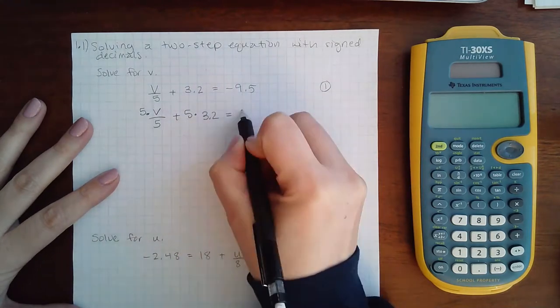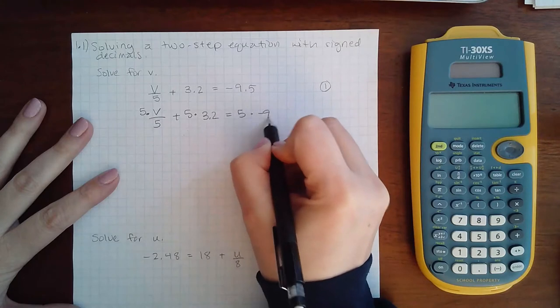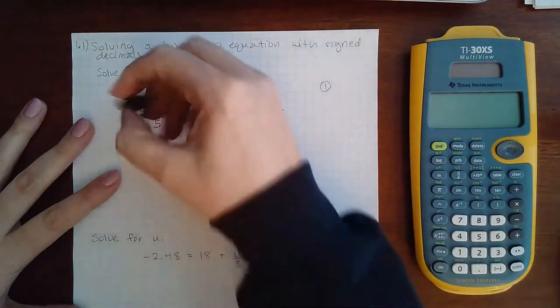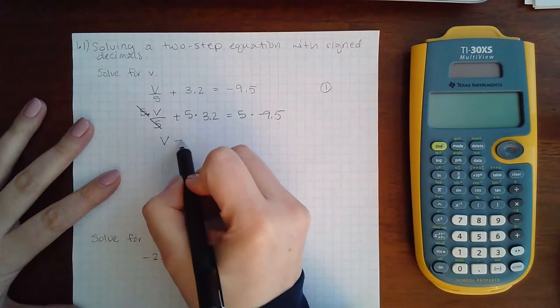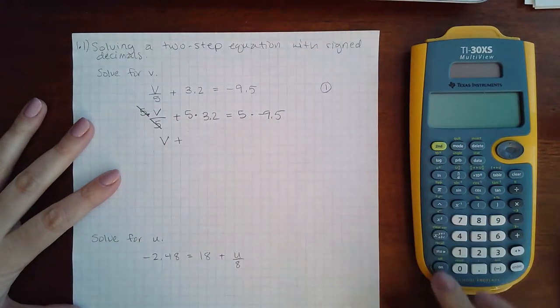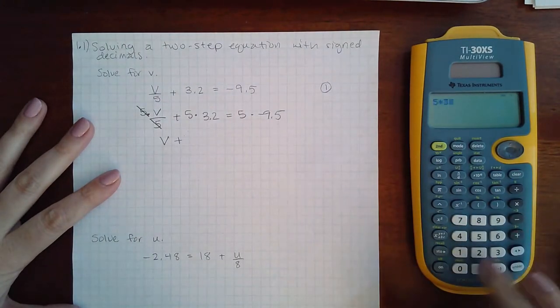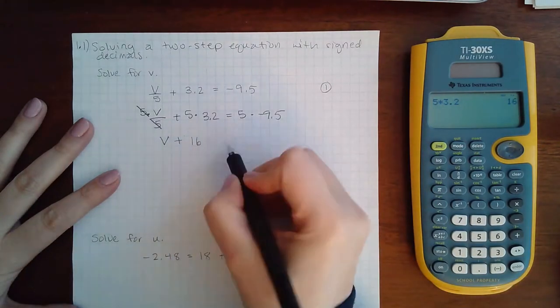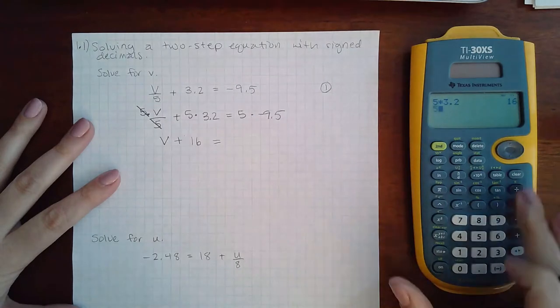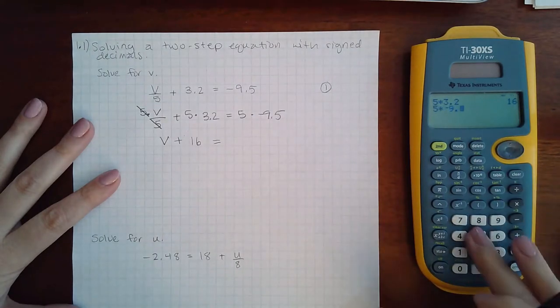I multiply every term, no matter what the term is. So here this eliminates the fraction and I'm just left with V. 5 times 3.2 is 16 equal to 5 times negative 9.5.